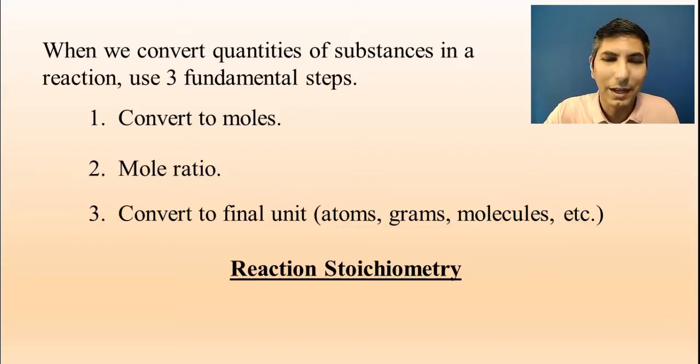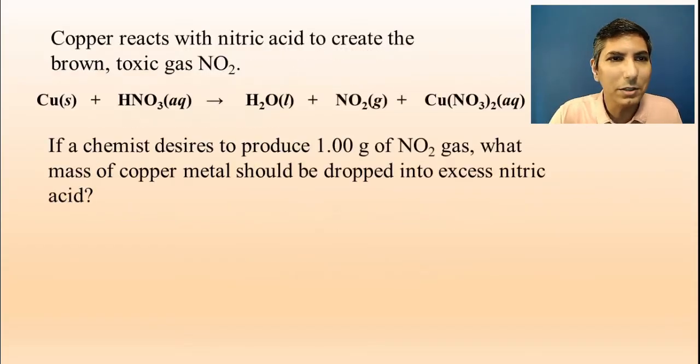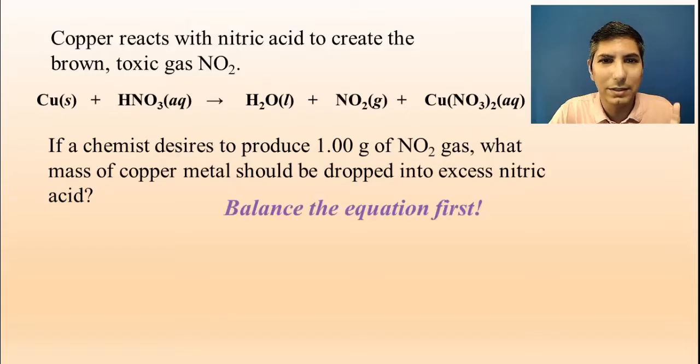We're going to do a couple examples here and see how this works. In this first problem, copper reacts with nitric acid to create the brown toxic gas nitrogen dioxide. If a chemist desires to produce 1.00 grams of NO₂ gas, what mass of copper metal should be dropped into excess nitric acid? The first thing that you want to do is balance the equation. This only works if we have a balanced chemical equation.